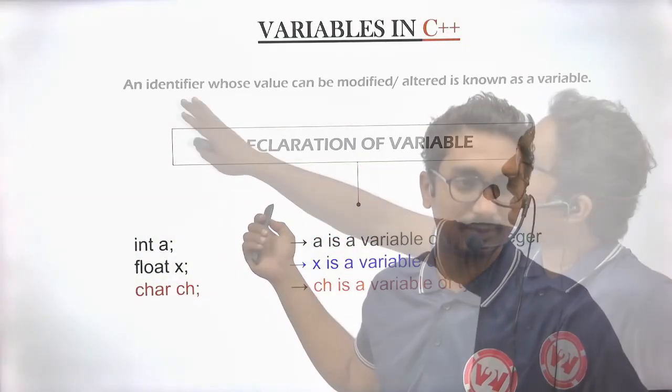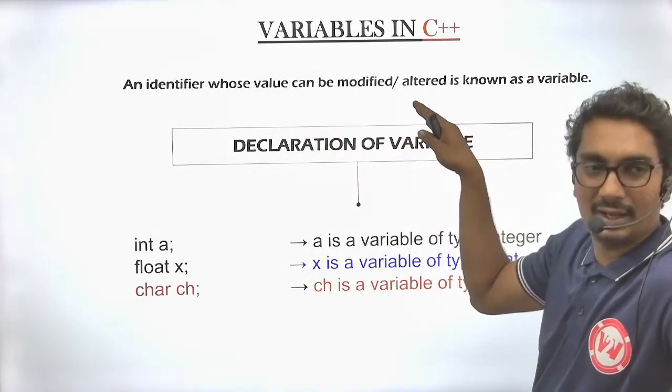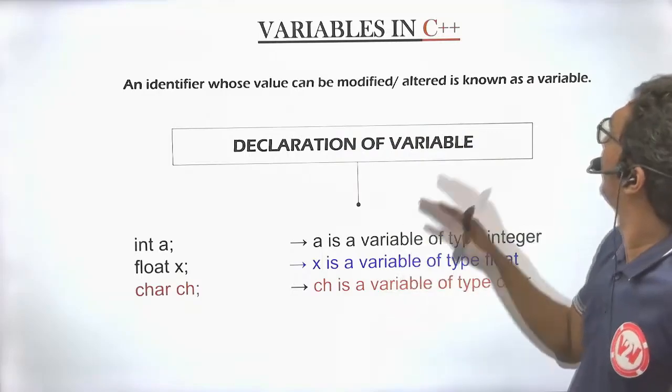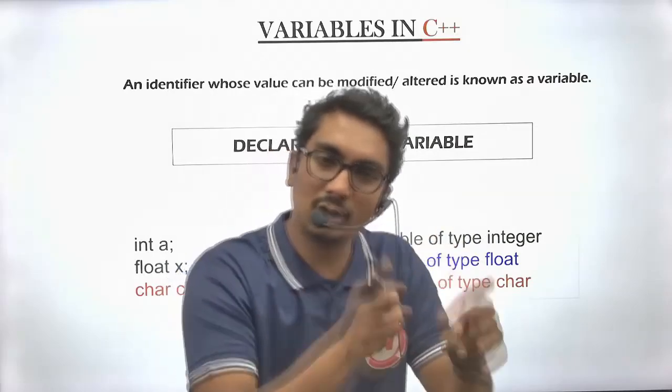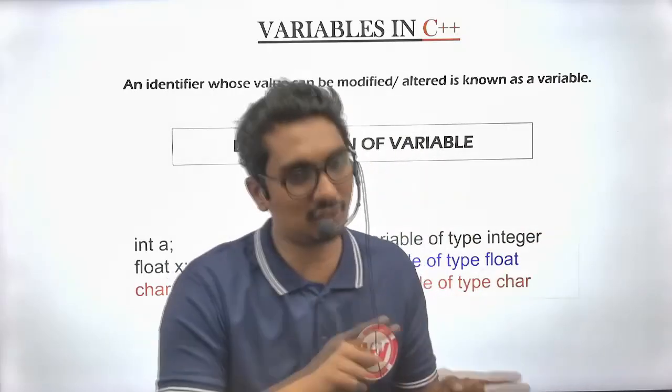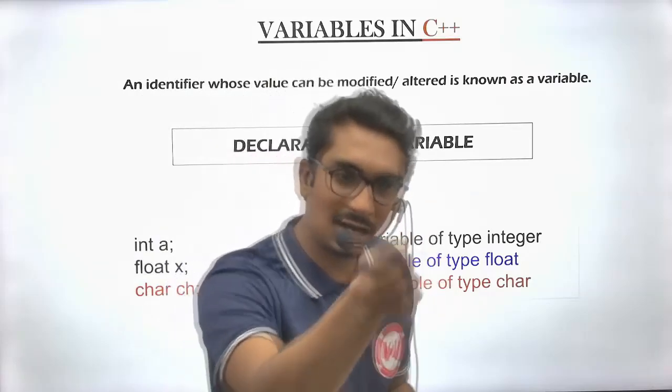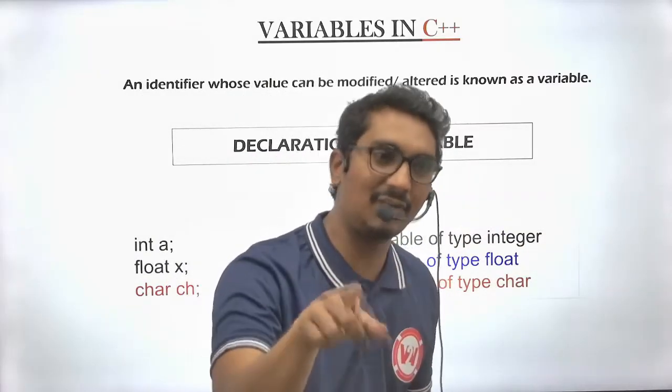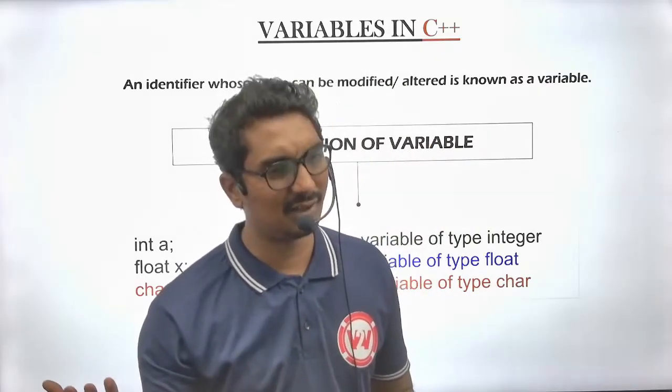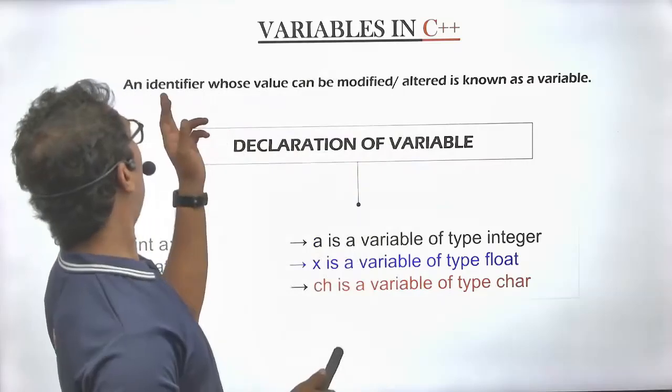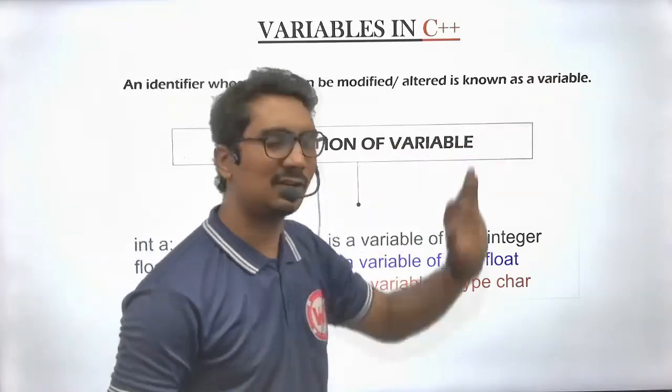Variable. An identifier whose value can be modified or altered is known as a variable. An identifier whose value is not changed throughout a program is called a constant.